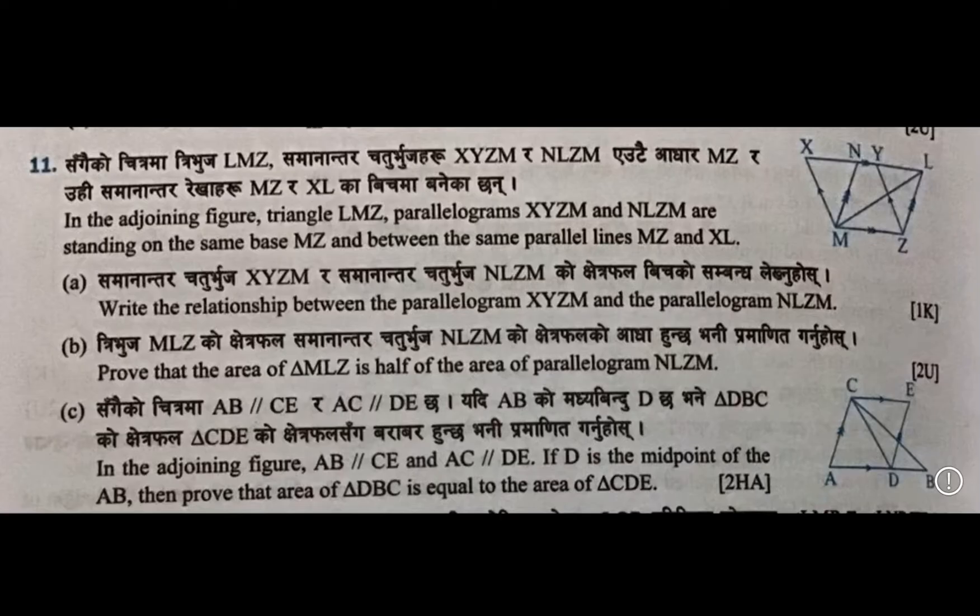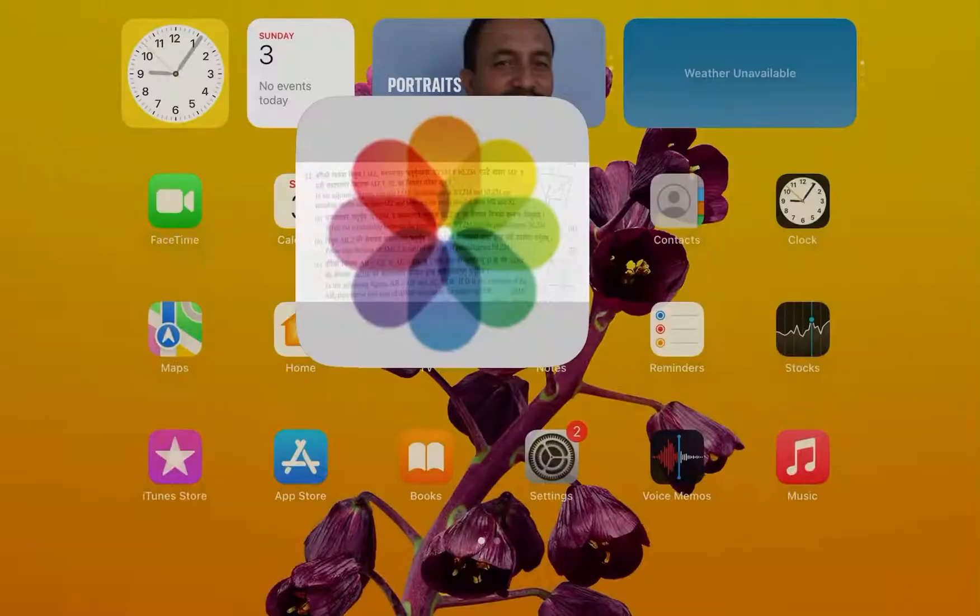Part C: in the adjoining figure, AB is parallel to C, AC is parallel to D, and D is the midpoint of AB. Prove that area of triangle DBC is equal to area of triangle CDA. These three questions I am going to solve now. Let us begin from number A.